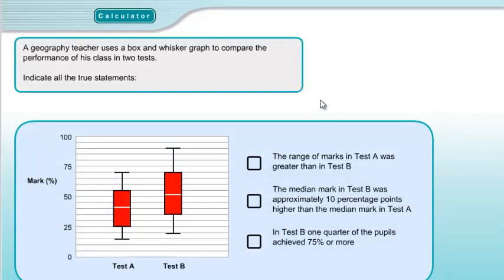Question 5 is box and whisker plots. We just have to indicate all the true statements. Statement 1: The range of marks in test A was greater than in test B. We can see straight away this is false — the range from whisker to whisker is much smaller in test A than in test B.